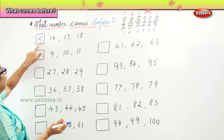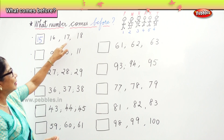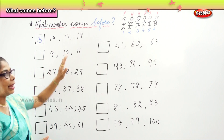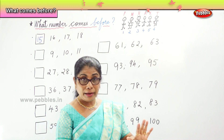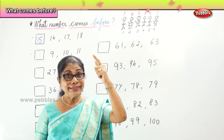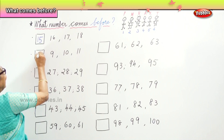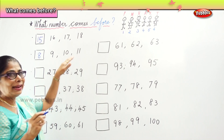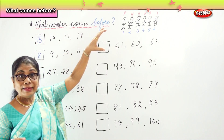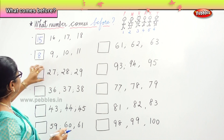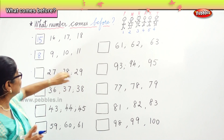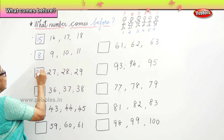Count: 15, 16, 17, 18 — that's very good. Next we have 9, 10, 11. Before 9, remember the counting — before 9 is 8. So you get 8, 9, 10, 11. What number comes before 27? 27, 28, 29 — before 7 is 6, so it will be 26. Excellent.